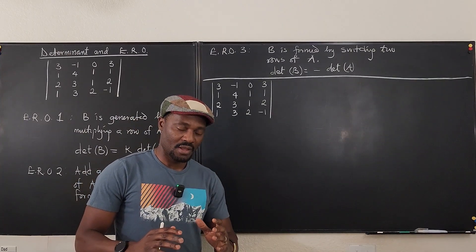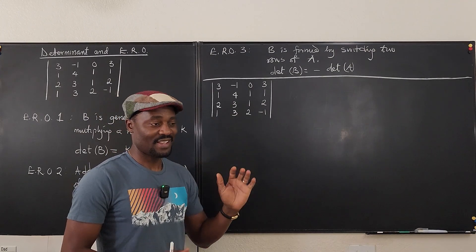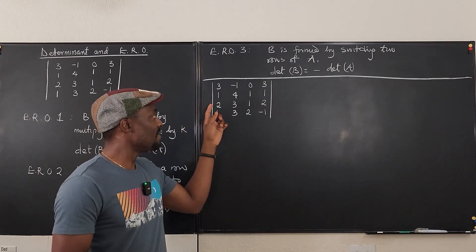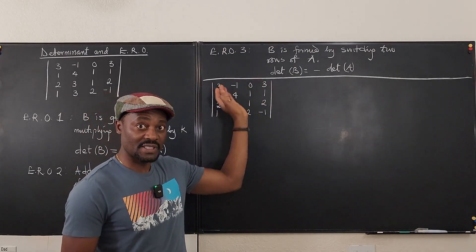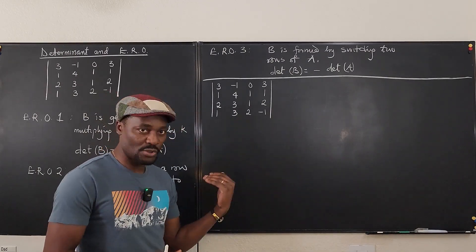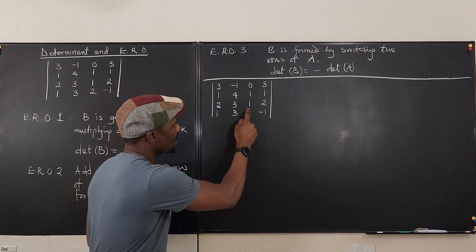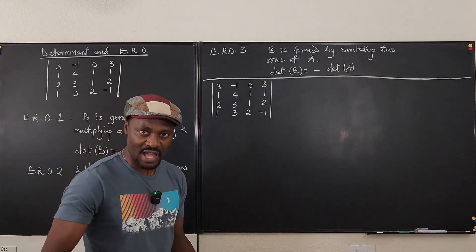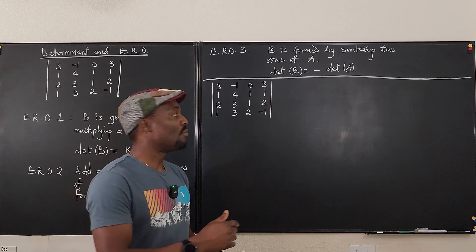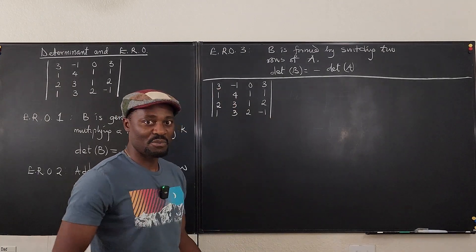Before continuing, there are other methods for computing this determinant. One approach is to perform many elementary row operations to generate zeros either below or above the diagonal, producing an upper or lower triangular matrix. Then you simply multiply the diagonal entries to get the determinant. For a 4x4, you'd need to zero out six entries below the diagonal. But in this video, I'll focus on generating zeros along a chosen row or column and using cofactor expansion.